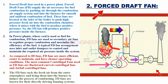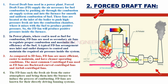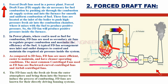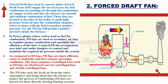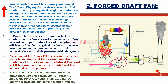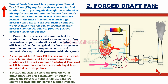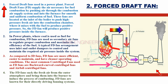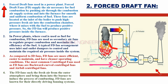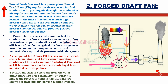Let's move on to the FD Fan. Forced Draft Fans supply the air necessary for fuel combustion by pushing air through the combustion air supply system and into the furnace for smooth and uniform combustion of fuel. These fans are located at the inlet of the boiler to push high-pressure fresh air into the combustion chamber, where it mixes with the fuel to produce positive pressure. So the FD Fan will produce positive pressure inside the furnace.